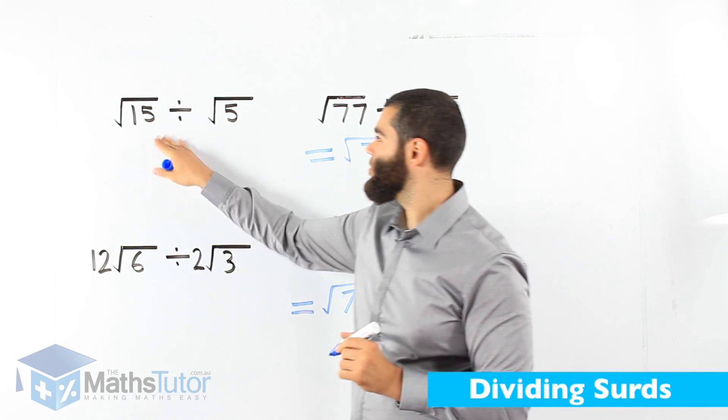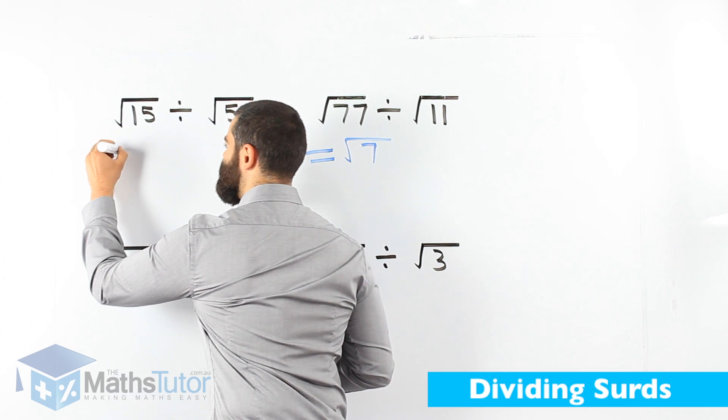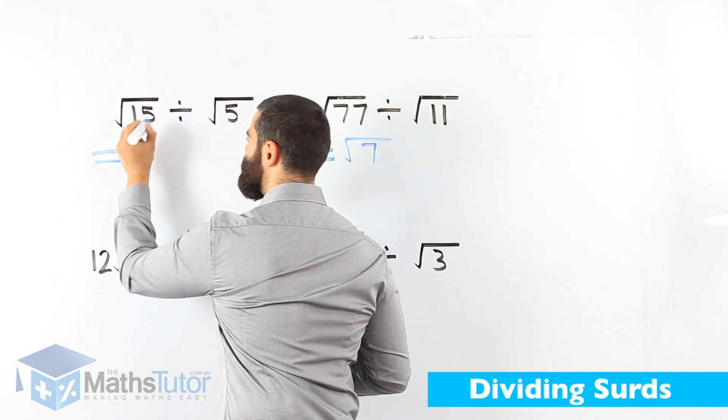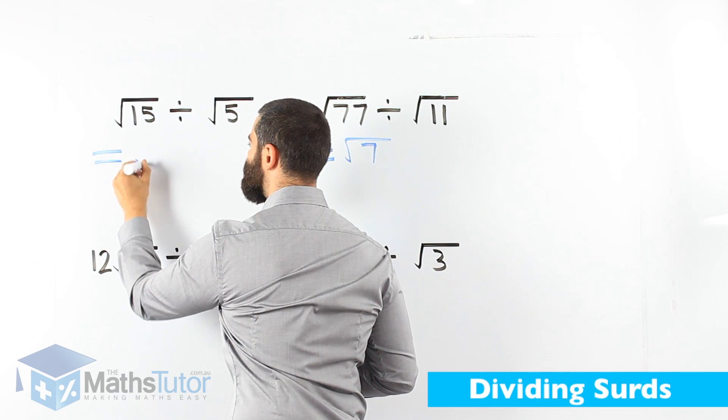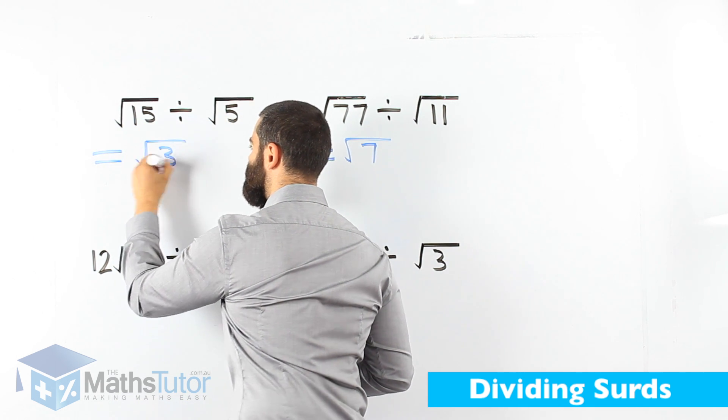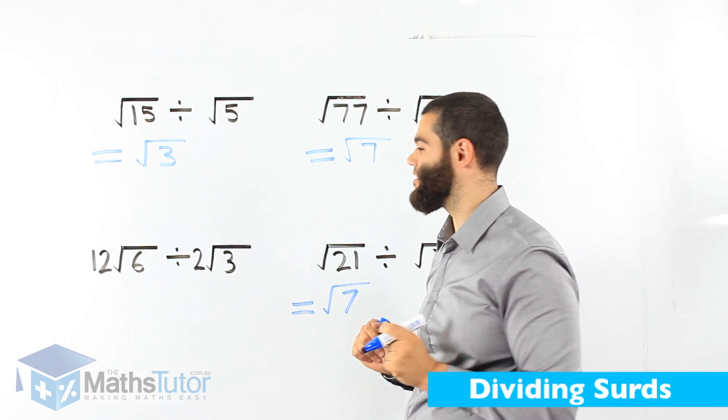Another one. Root 15 divided by root 5. Once again, we can divide the surds. Root 15 divided by root 5, 15 divided by 5. Root 3 is the answer. So we can divide surds normally. Very easy.